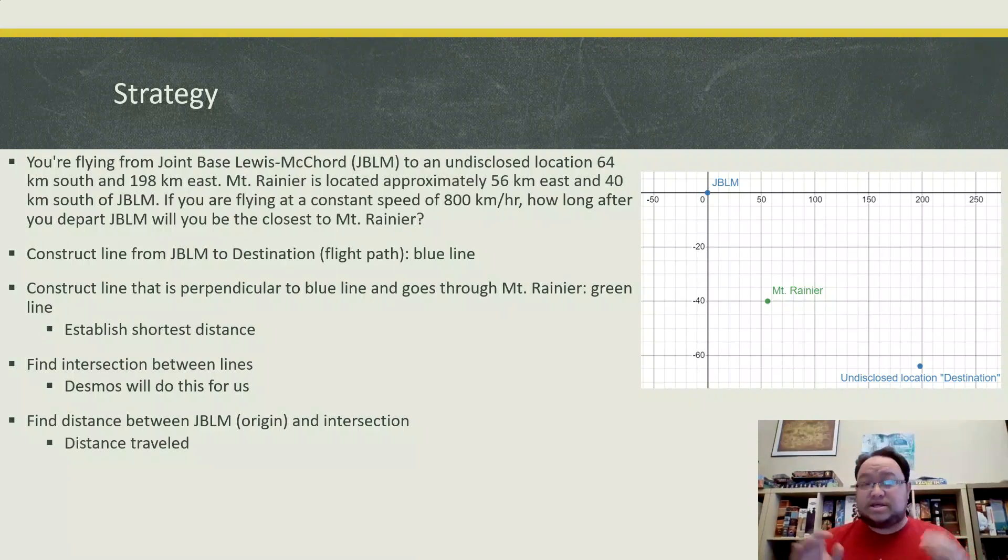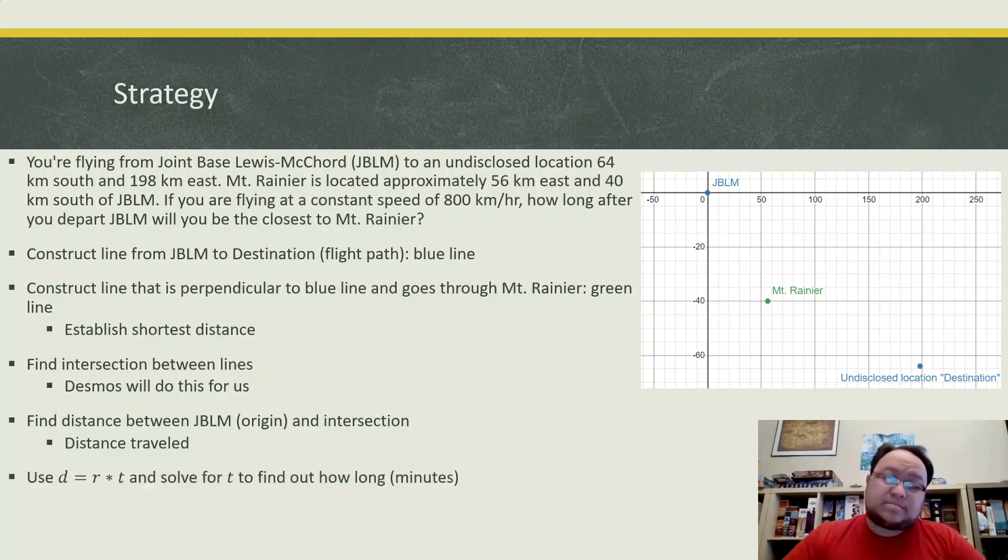Which will tell us the distance, right? So once we find that, we'll know how far we've flown in order to get to that shortest distance from the flight path to Mount Rainier. And then we're going to use this formula, d equals r times t, and then solve it for t to figure out how long it is.